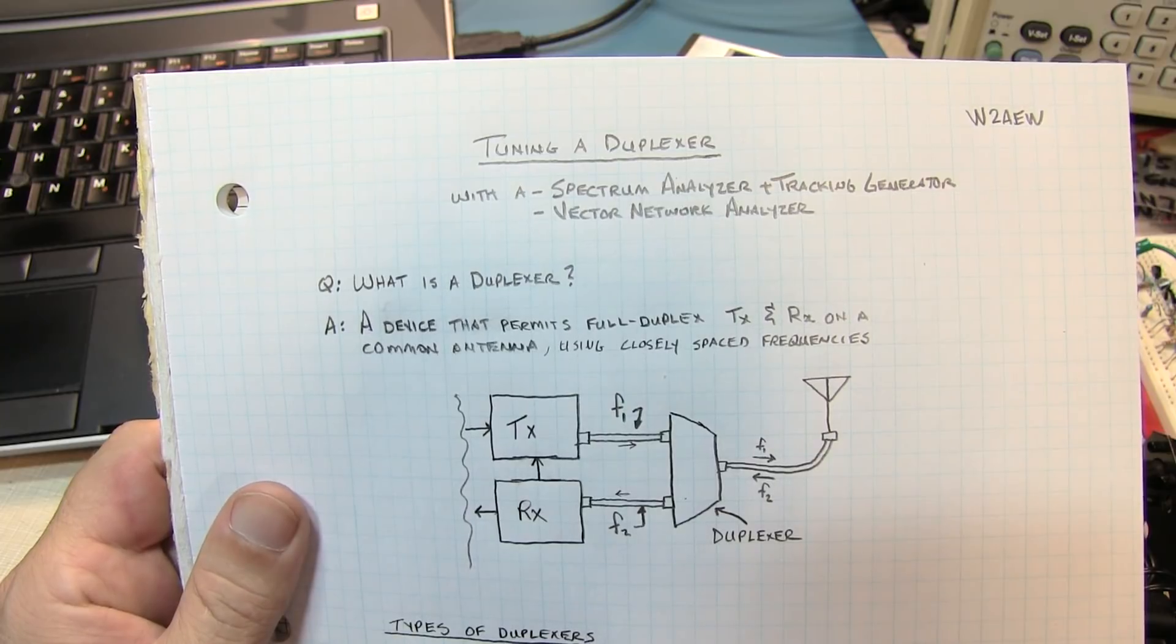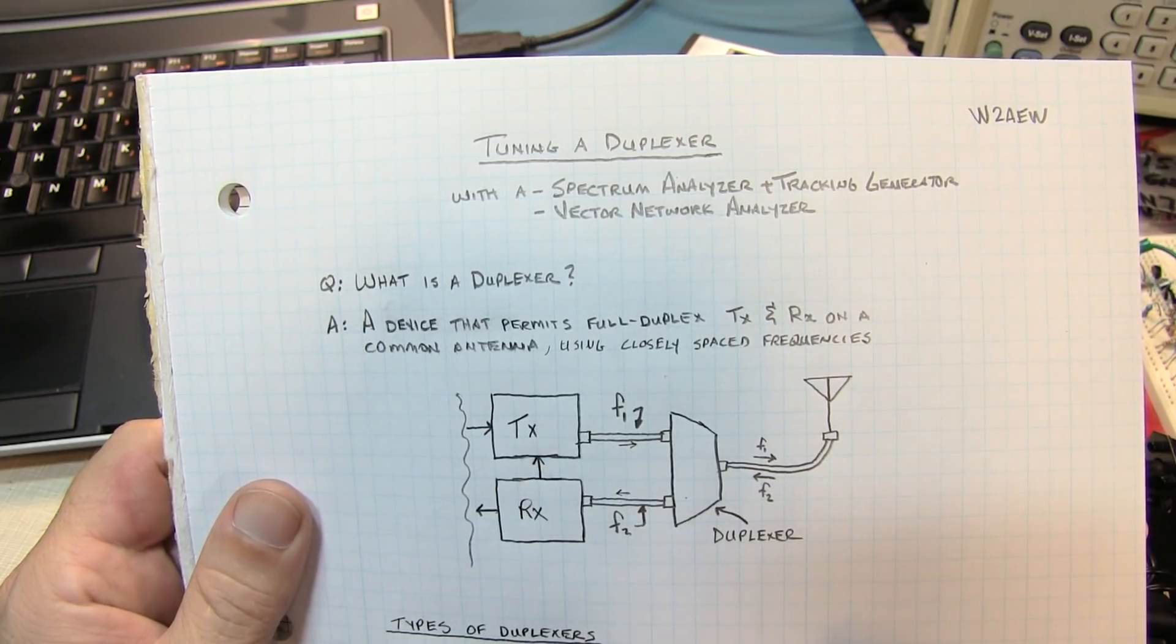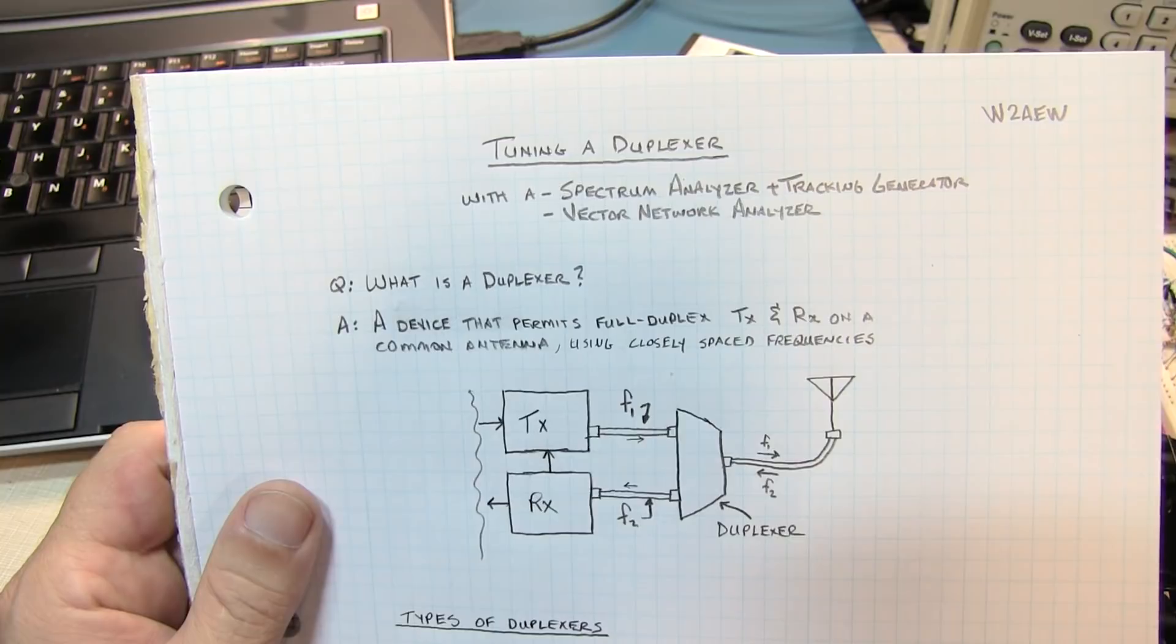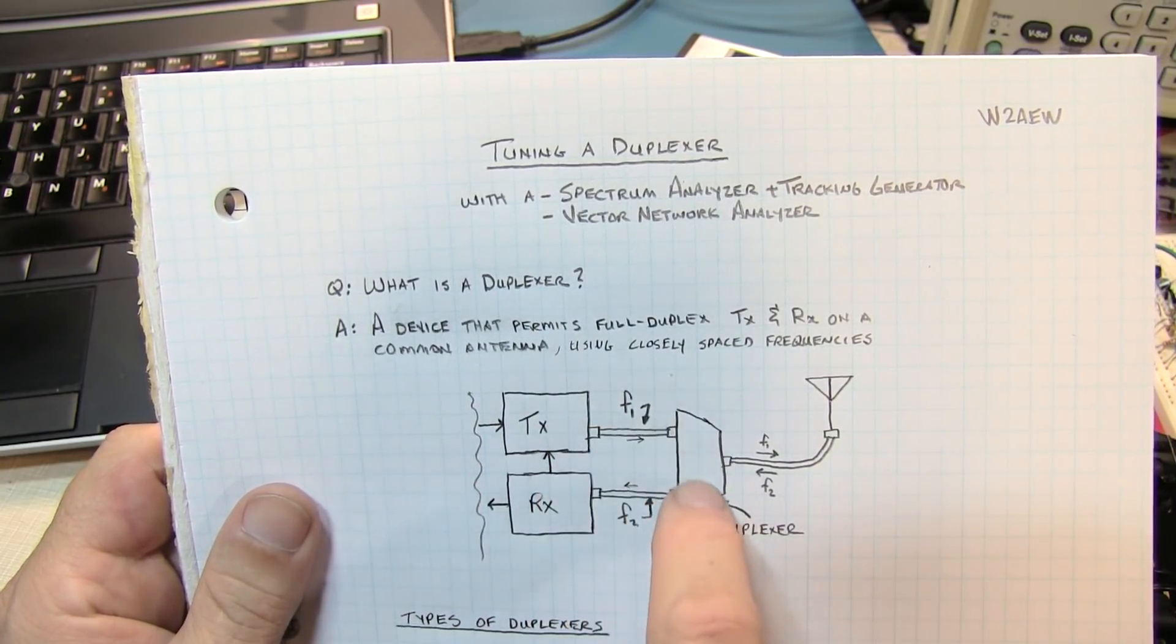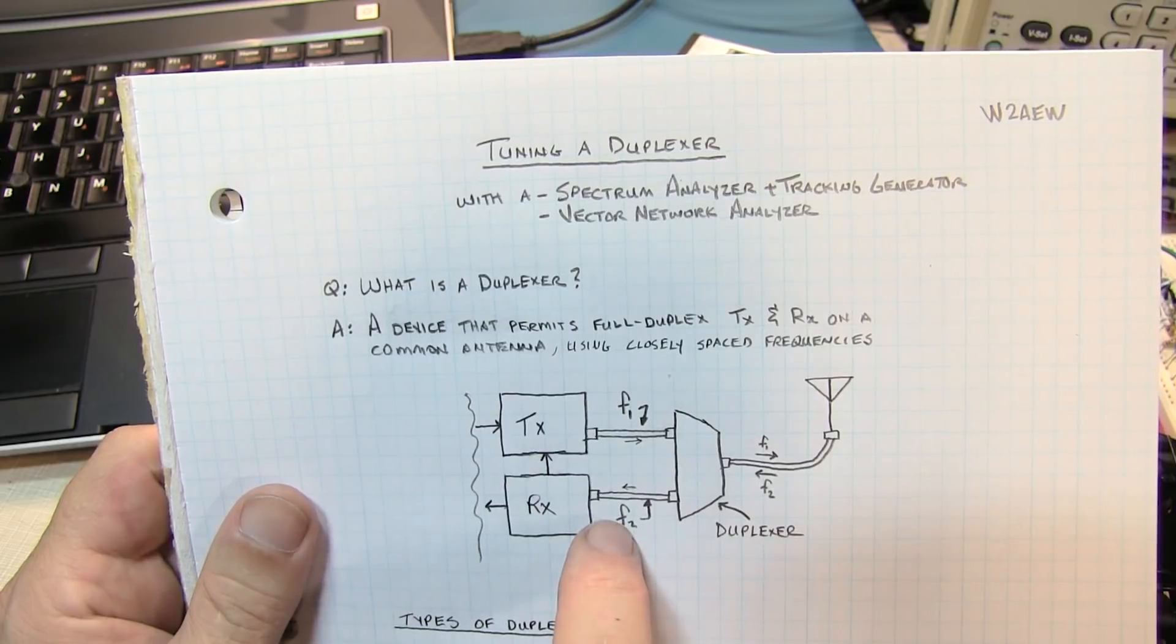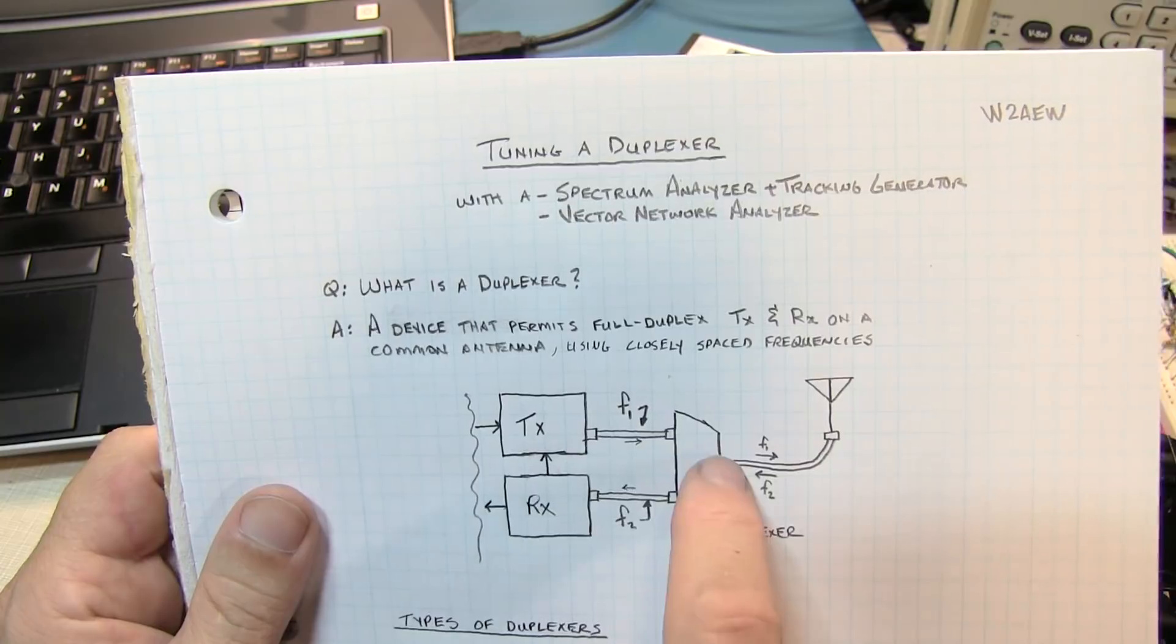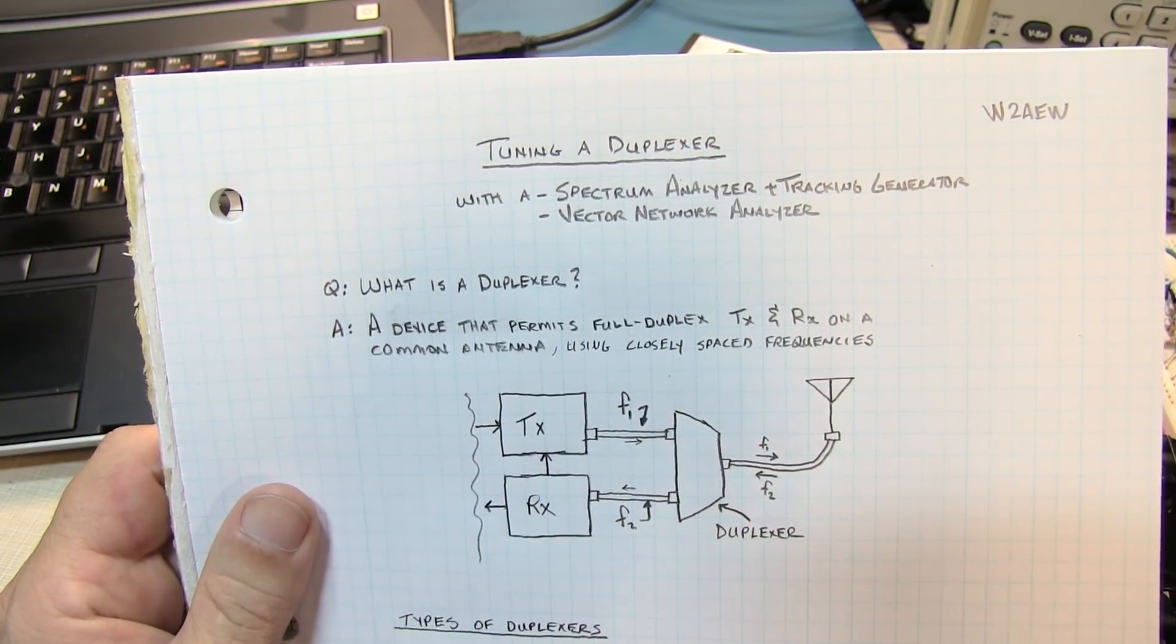This is often used in common applications like cellular telephones as well as public service radio and amateur radio repeaters. Because the transmissions occur simultaneously, the duplexer must ensure that the transmit frequency doesn't get into the receiver and the receive signal coming in doesn't get into the transmitter. Because these signals are very closely spaced, that places strong requirements on the filter properties and the band pass and band reject characteristics of the duplexer.